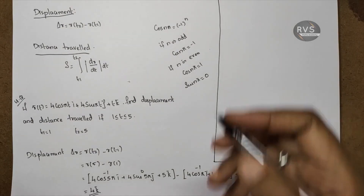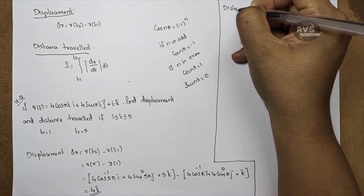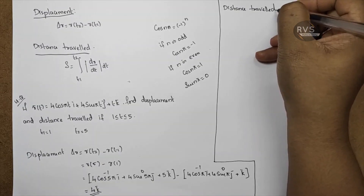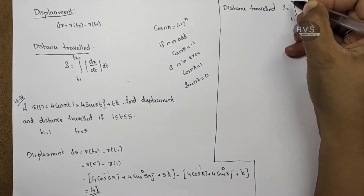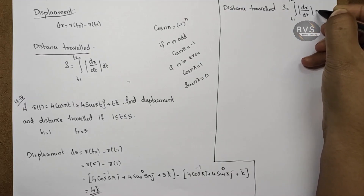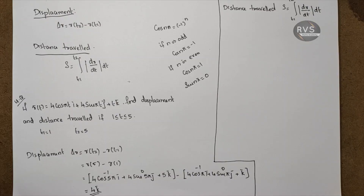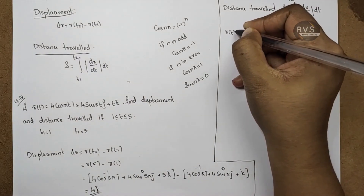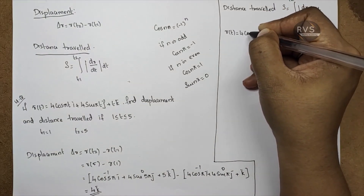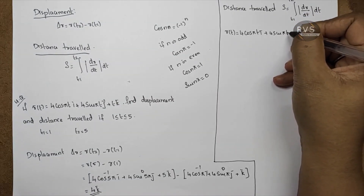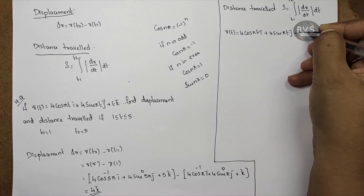Now for distance traveled, the formula is the integral from t1 to t2 of the modulus of dr/dt, dt. We need to find dr/dt. Given r(t) = 4cos(πt)i + 4sin(πt)j + tk.